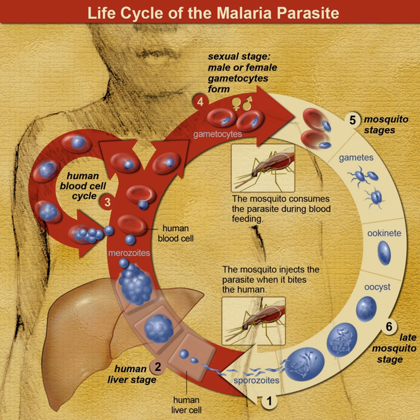The first record of argument against the miasmatic nature of malaria was from an American physician John Crawford. Gorgas wrote an article, "Mosquito origin of malarial disease," in the Baltimore Observer in 1807, but it provoked no consequences.